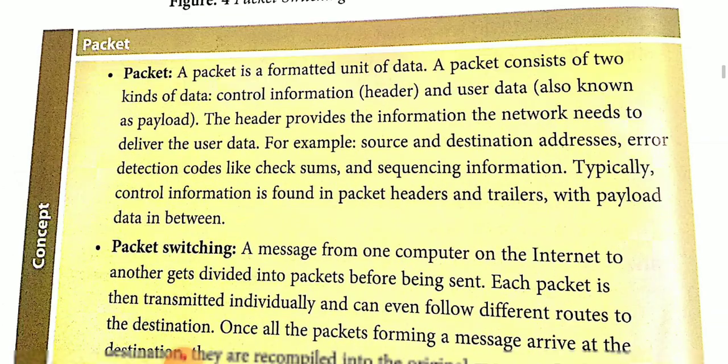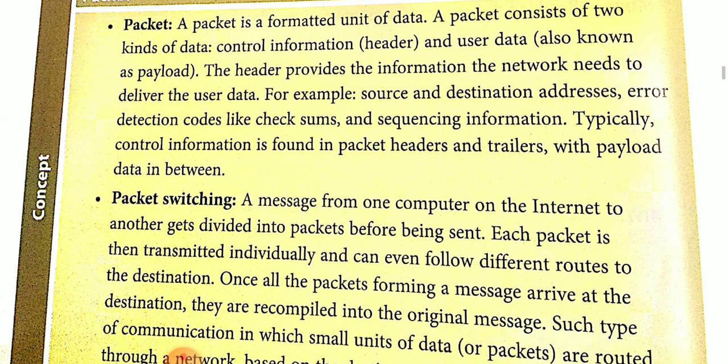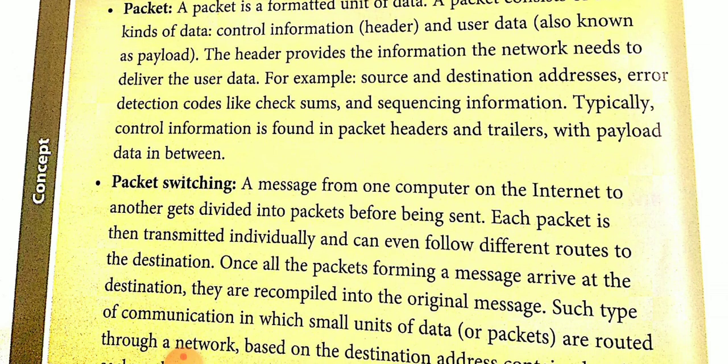A packet is a formatted unit of data. A packet consists of two kinds of data: one is control information — it means header — and the other is user data, also known as payload. The header provides the information the network needs to deliver the user data. For example, source and destination address, error detection code like checksum, and sequencing information. Control information is found in a packet header and trailers, with payload data in between.